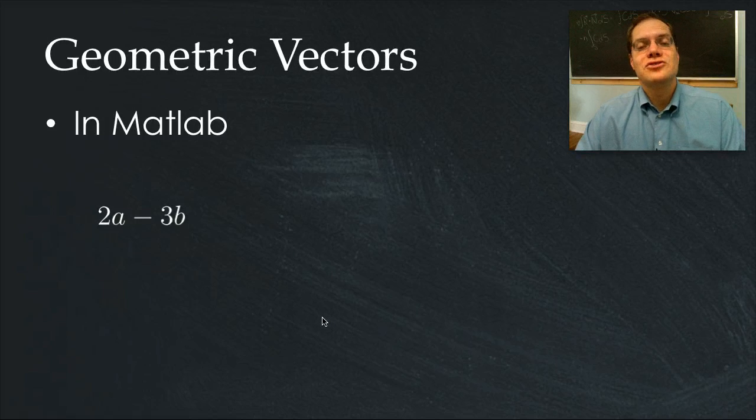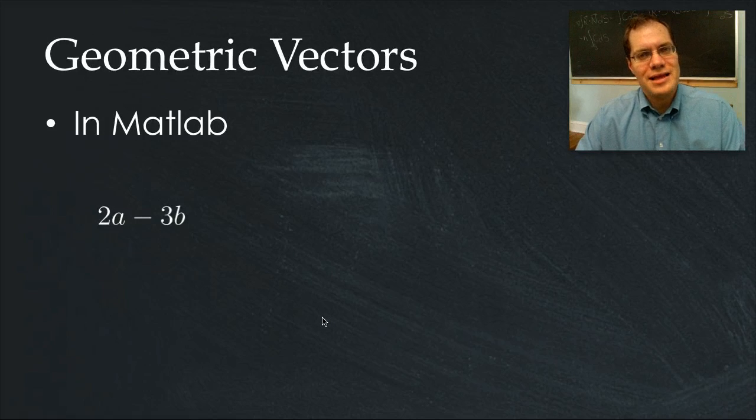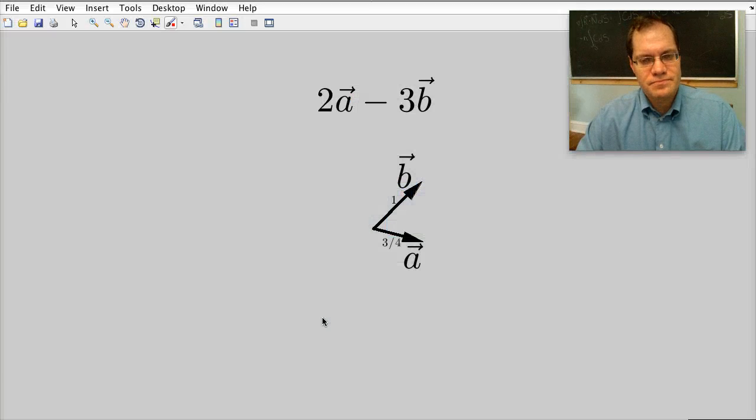Let's look at a short demo I prepared in MATLAB. Here are vectors a and b. Once again, our goal is to evaluate 2a minus 3b. Vector a has length 3 quarters, vector b has length 1, and the angle between them is pi over 3.